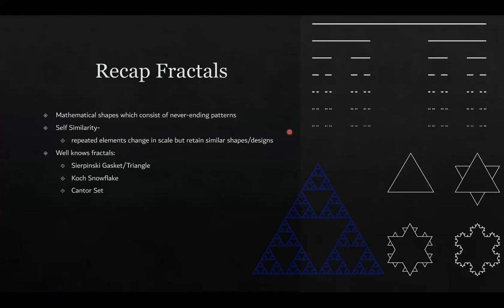I'm assuming all you genius mathematicians have definitely heard of fractals, however I'm just going to do a quick recap and dust up some of those cobwebs. Fractals are mathematical shapes that are made up of never-ending patterns. A term which is commonly incorporated with fractals is self-similarity. Self-similarity was proposed by Mandelbrot in 1975, where he stated that any curve or surface, independent of its scale, follows the rule of self-similarity and therefore is classified as a fractal.